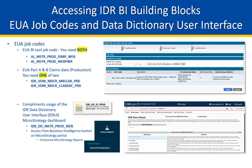The job codes are broken out between the MicroStrategy tool and the IDR data sources. There are two BI tool EUA codes. The DIMP one, short for Data Import, grants exactly that — import functionality into the MicroStrategy portal at CMS. Every user has 100 megabytes of space for use. This is a great area for data extracts you may want to use for future queries — no need to recreate them, merely import and data wrangle along the way. The Web Power Code maximizes the BI tool capabilities, essentially all the bells and whistles within the BI tool.